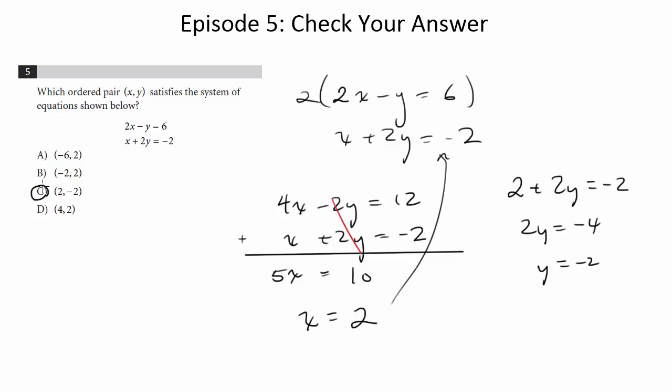But now like I said, let's really confirm this one by plugging this point into both equations. Now we've already done it for the bottom one so there's really no point in plugging that one in again. Though I mean, I guess you can see 2 plus negative 4 is equal to negative 2. But let's plug it into the top guy and make sure this works.